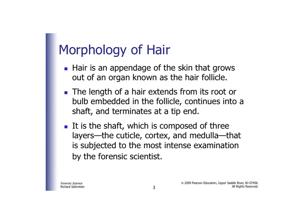Morphology is just a fancy word for shape or structure. Hair is actually part of your skin — it's considered an appendage, which means something coming out from the skin. It goes all the way from the bulb, or the root of the hair, to the end of the hair follicle. The shaft, which is the bulk of the hair, has three parts: the cuticle, the cortex, and the medulla.